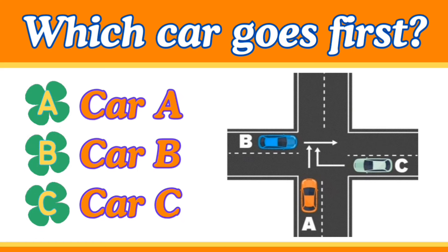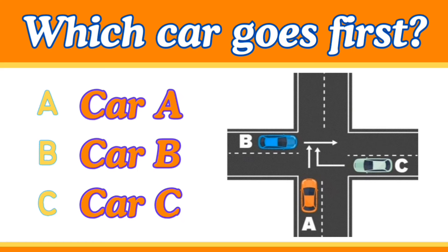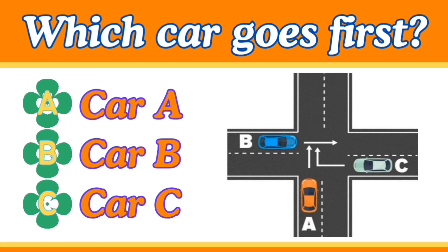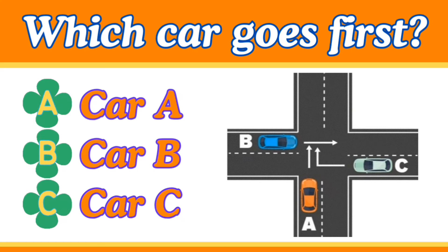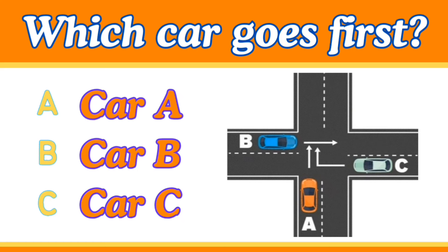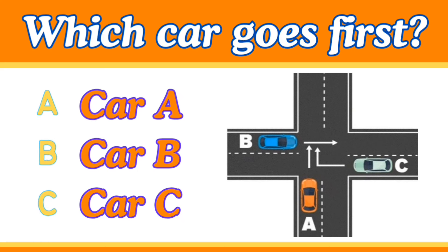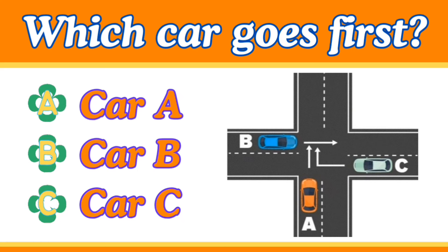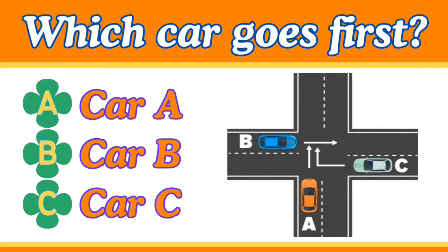So car C will have to move slightly to the center and stop just before it makes that right turn, thereby giving way for car B to cross the intersection. As soon as car B finishes crossing, car C will then be free to make its right turn and will be the second car to cross this intersection.